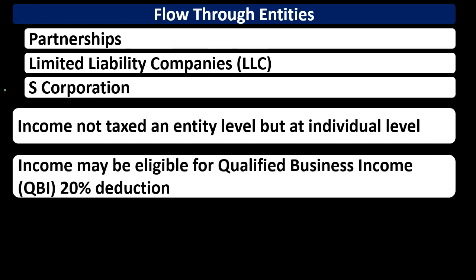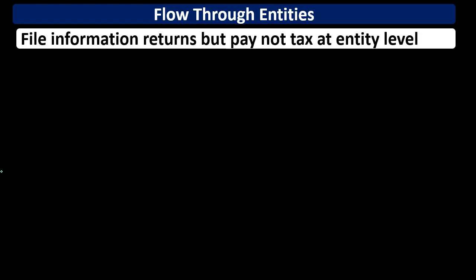Income from flow-through entities may also be eligible for the qualified business income deduction — the QBI 20% deduction — which is a significant deduction. As we see these flow-through entities, they may qualify for that deduction, making it an important consideration.